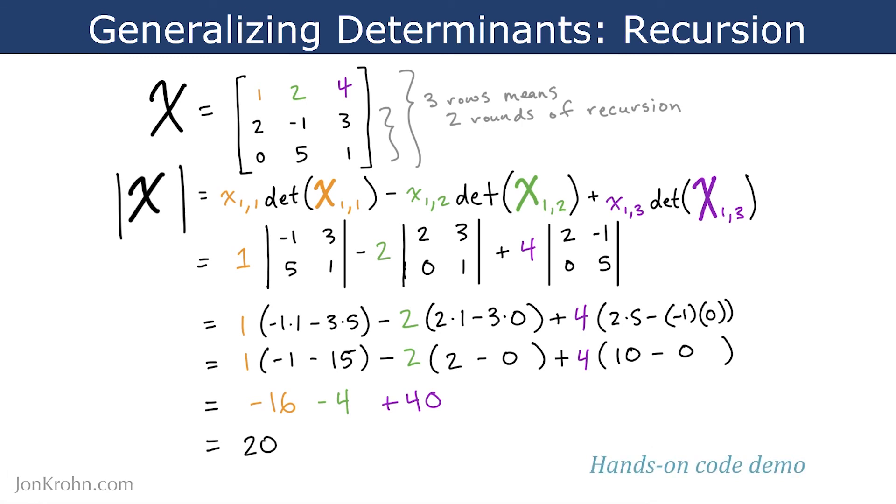Let's jump to a hands-on code demo to see this in code. Oh, and I should mention that, of course, because this value isn't 0, it means that our 3x3 matrix here can be inverted.